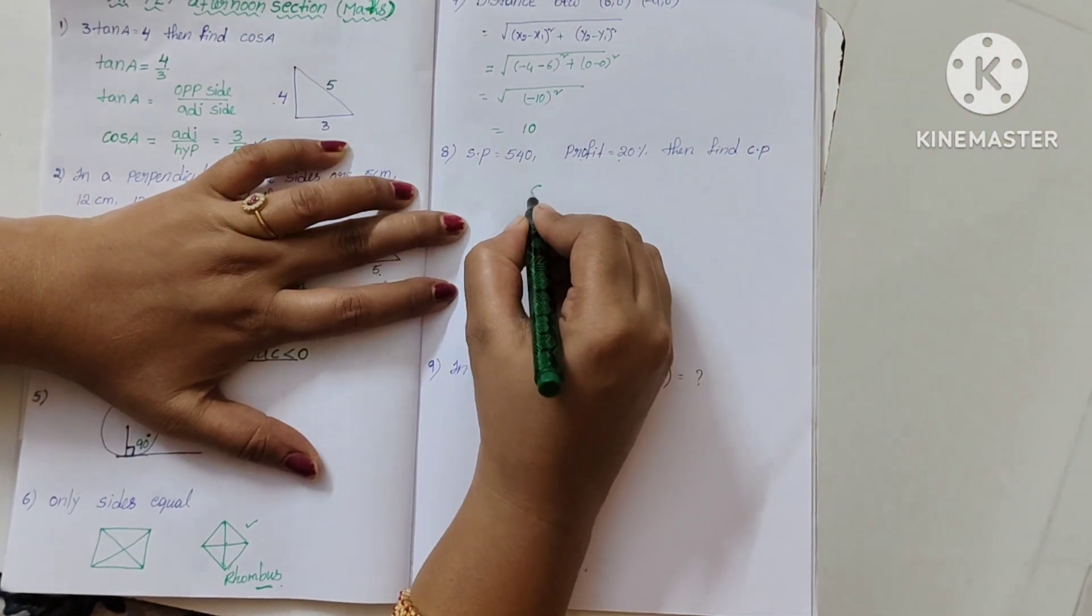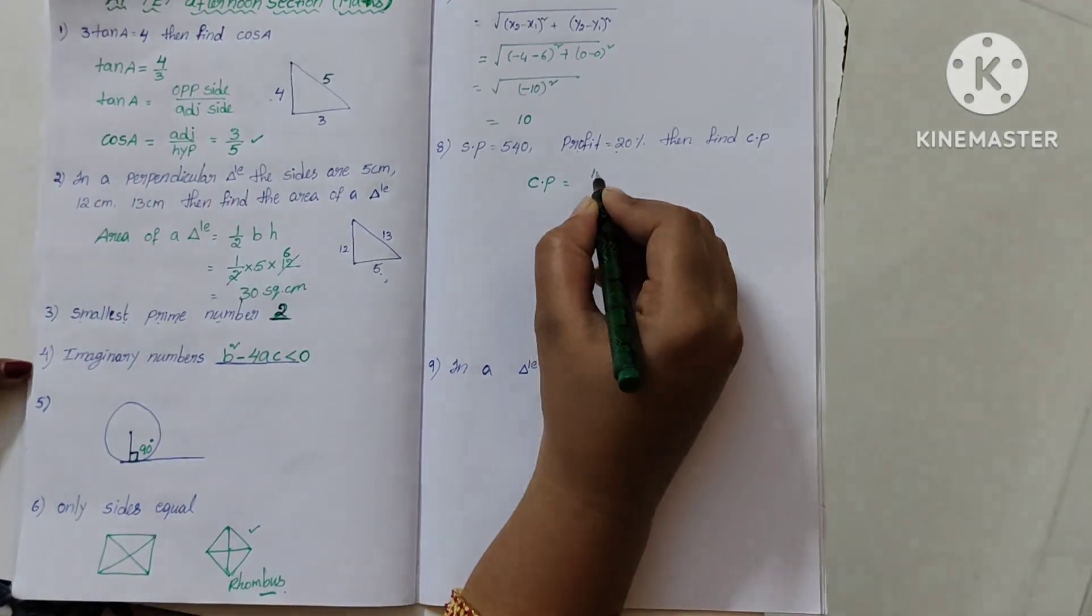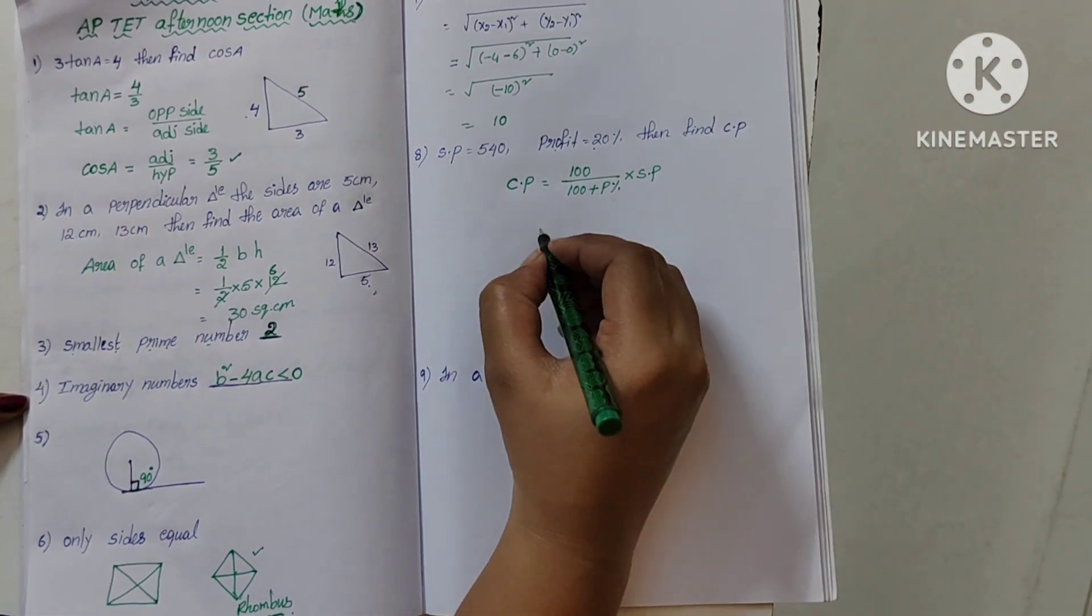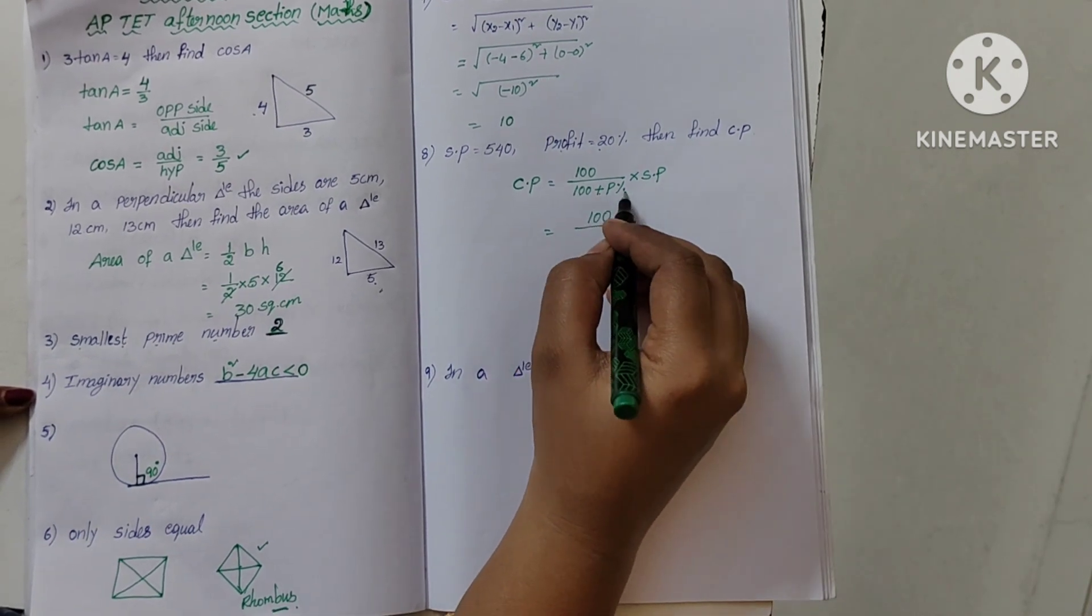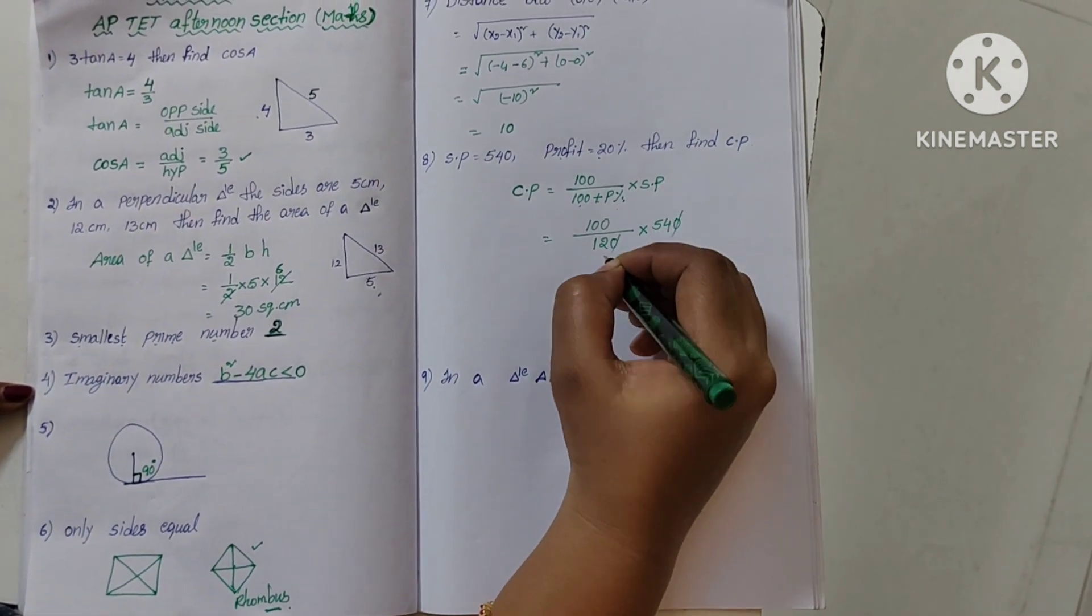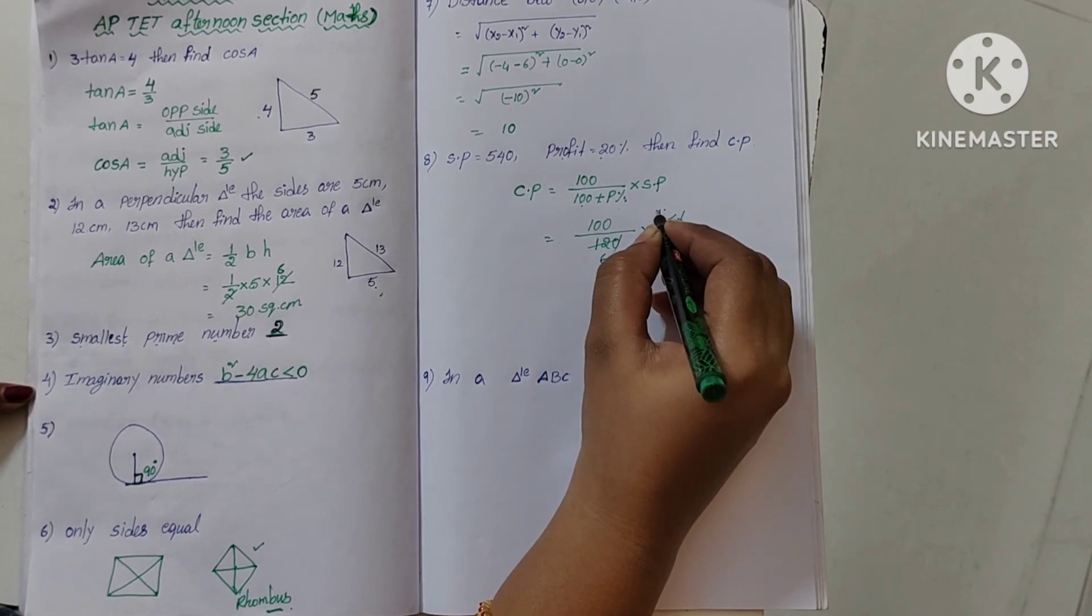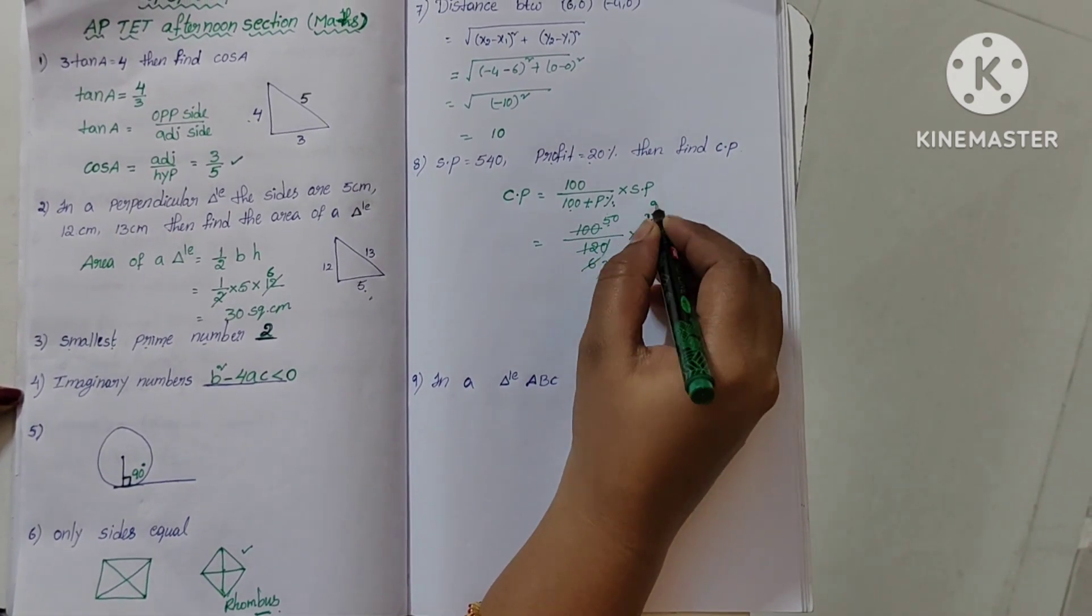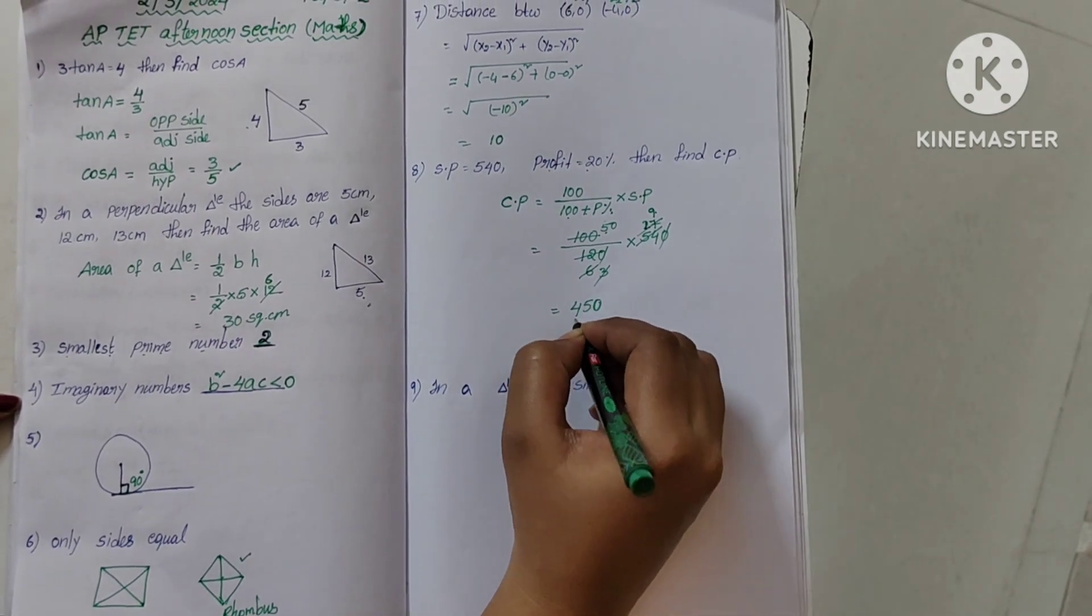Then find the cost price. Cost price equals 100 by 100 plus profit percentage into SP. Then 100 by 120 into 540. Cancel: 2 table 12, 6 times 54, 27 times, 2 table 6, 3, and 50 times 9 equals 450 is the answer.